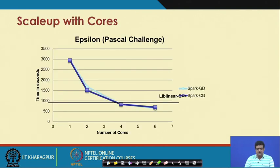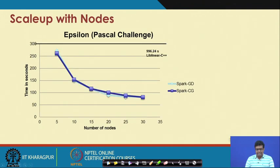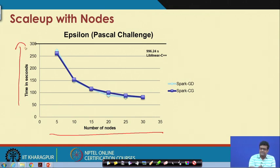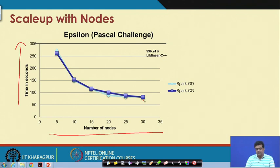These are some results of implementing this program using the MapReduce paradigm. On the x-axis is the number of nodes and on the y-axis is the time taken in seconds. You can see that initially there is a larger drop as you increase the number of nodes from 5 to 10, but as you keep increasing the number of nodes, after a while the improvement saturates.